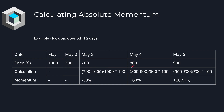For May 4th, we can look at $500 to $800, and we can see there's about a 60% gain. For May 5th, we can look at $700 to $900, and we can see there's about a 28% gain.